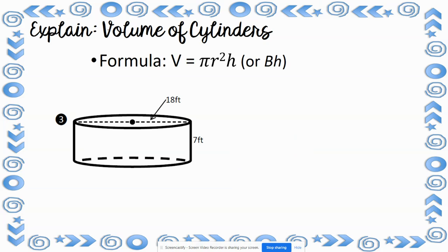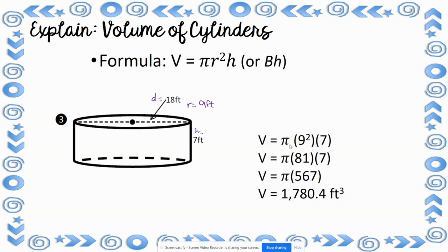For number 3, this cylinder has a diameter of 18 feet — I know it's the diameter because it goes all the way across. So the radius is half of that, which is 9 feet. The height is 7 feet. Plugging in: pi times 9 squared times 7. 9 squared is 81; 81 times 7 is 567; 567 times 3.14 gives 1,780.4 cubic feet.